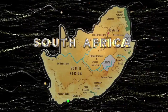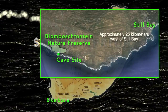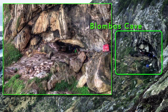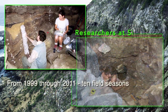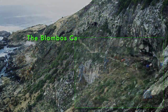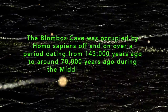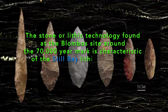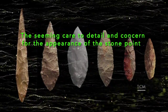We will start with the Blombos Cave site. The Blombos Cave is located on the southern coast of South Africa in the Blombos Fontein Nature Preserve, approximately 25 kilometers west of the town of Stilbaai. The cave site sits about 100 meters from the current shoreline at an elevation of about 35 meters above sea level. The Blombos Cave site was first excavated in 1991 by Christopher Henshilwood. From 1999 through 2011, 10 field seasons, each six weeks long, were carried out at the cave site. The Blombos Cave was occupied by Homo sapiens off and on over a period dating from about 143,000 years ago to around 70,000 years ago during the Middle Stone Age. The stone or lithic technology found at the Blombos site around the 70,000 year mark is characteristic of the Stilbaai lithic tradition of bifacially worked stone points. The seeming care to detail and concern for the appearance of the stone points may be evidence of social and stylistic elaboration indicative of rising modernity in human behavior.